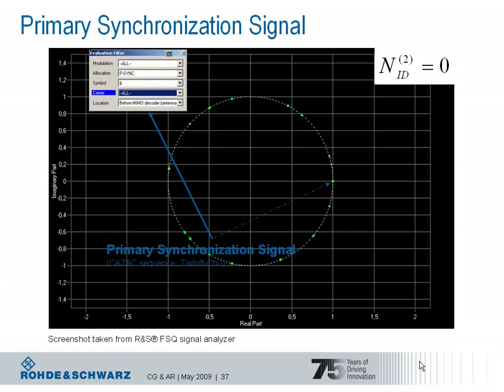This helps to perform match filtering to find the right sequence used for the primary synchronization signal. As explained, 72 subcarriers translate to 6 resource blocks, since 12 subcarriers form one resource block in the frequency domain. With 15 kHz subcarrier spacing, the occupied bandwidth around the carrier frequency is 1.08 MHz. Using the evaluation filter function of the Rohde and Schwarz FSQ signal analyzer, you can look at each subcarrier individually.